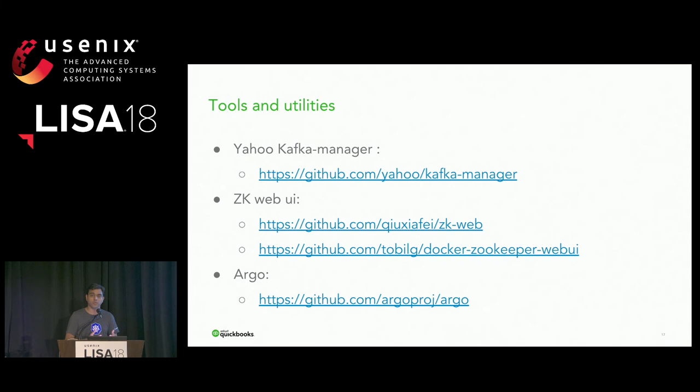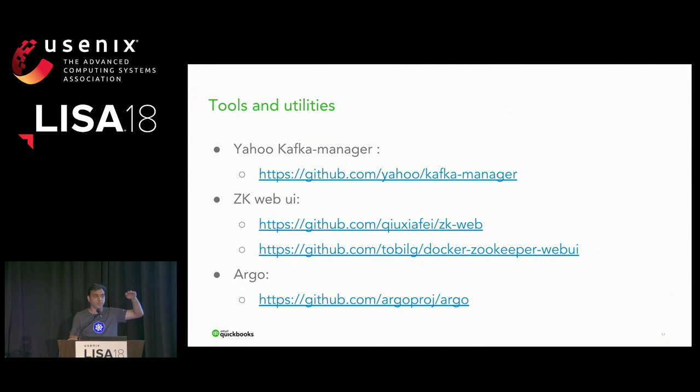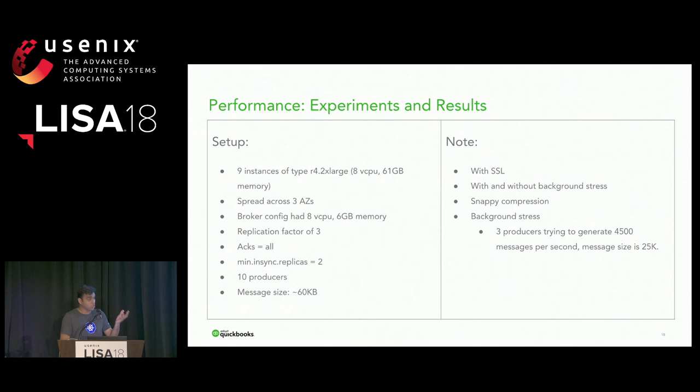Lastly, Argo. Argo is a project for running workflows on Kubernetes — I'm actually part of the team that built Argo. With Argo you get a YAML file in which you can specify the steps you want to run. We gave this to any engineering team wanting to onboard onto the Kafka service: you create a topic, run this workflow with one command, it runs something within the cluster, tests basic things like creating a topic, writing and reading some messages — giving them a tool for sanity testing their environments.